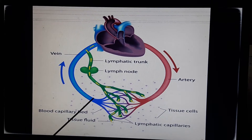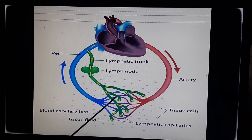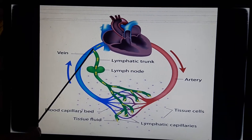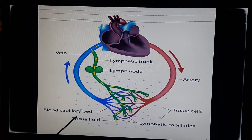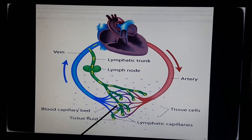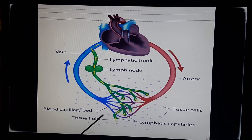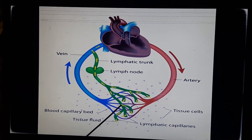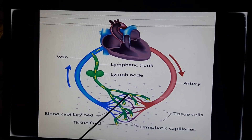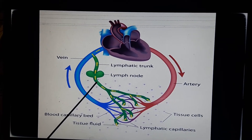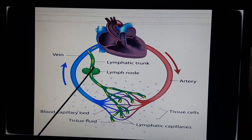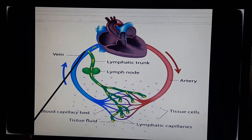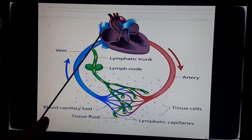Looking at the diagram again: here you can see the vein, artery, and these are the lymphatic capillaries. This one is a lymph node and lymphatic trunk, and then it is moving to the vein. Starting from the blood capillary, some fluid moves out and fills the intercellular spaces of the tissue — we call this tissue fluid. Tissue fluid enters the lymphatic capillaries, which join to form a lymphatic vessel. It then reaches the lymph node, then the lymphatic trunk, which takes the fluid to the vein, and the vein takes it to the heart for purification.